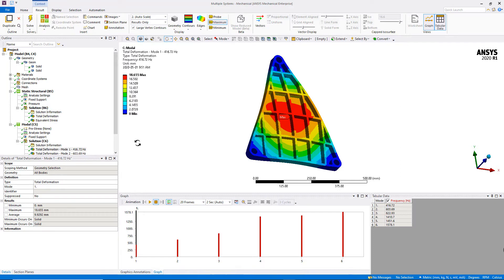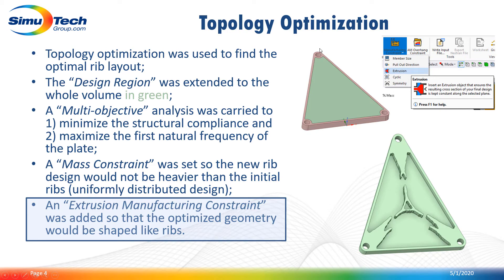For the topology optimization, sometimes we would simply link a topology optimization system to the baseline simulation. But in this case we will not do that, because we need to define a design region that extends over the whole area of the plate — the volume shown in green — which didn't exist in the baseline simulation. This means we need to go back into SpaceClaim and replace the ribs with the full volume, then rerun the baseline case.